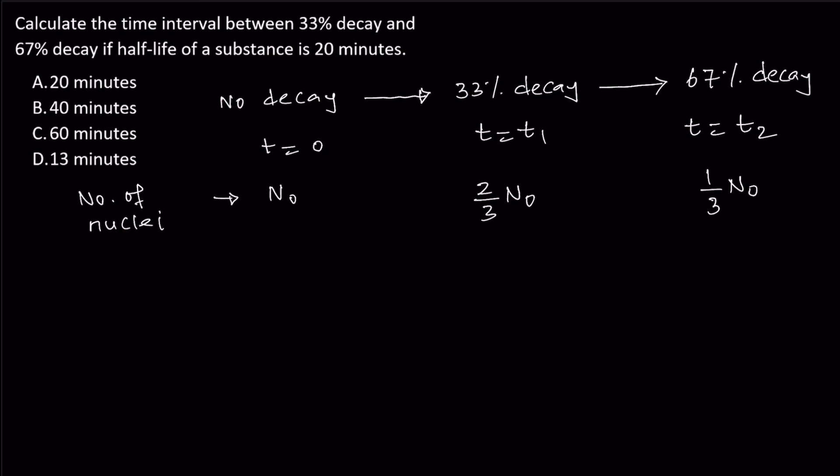So t₂ minus t₁ is clearly one half-life, which is 20 minutes.